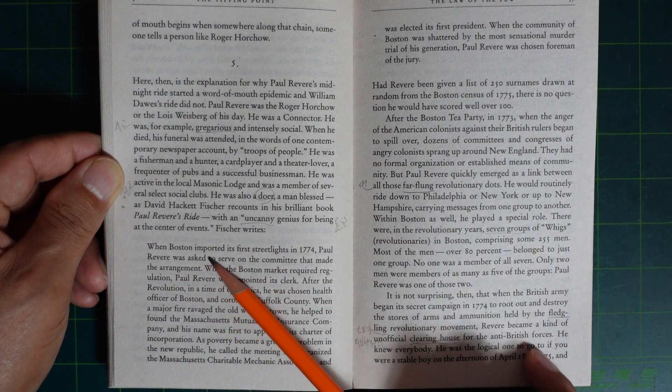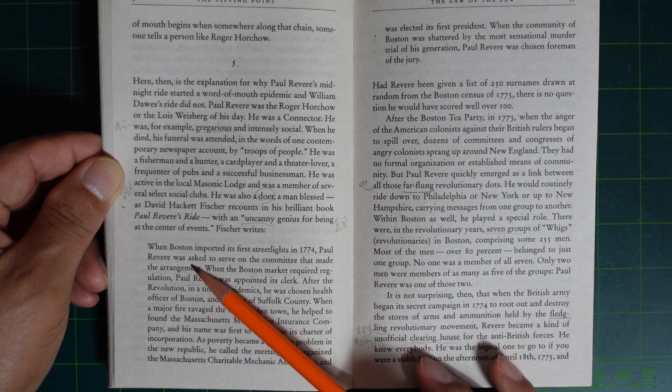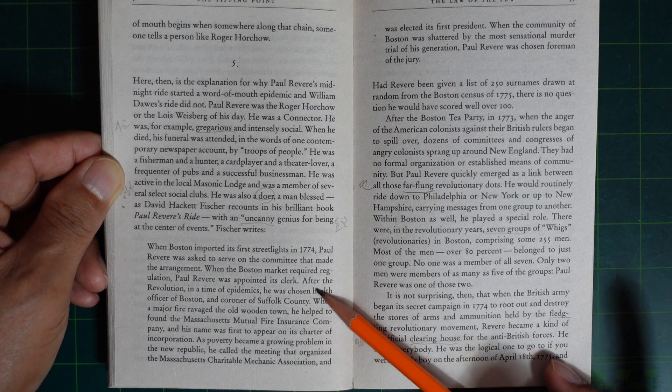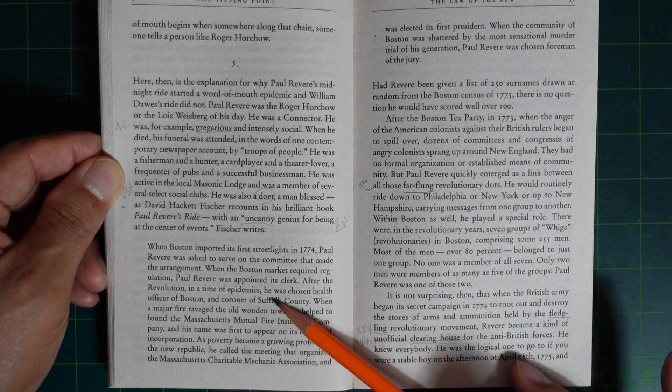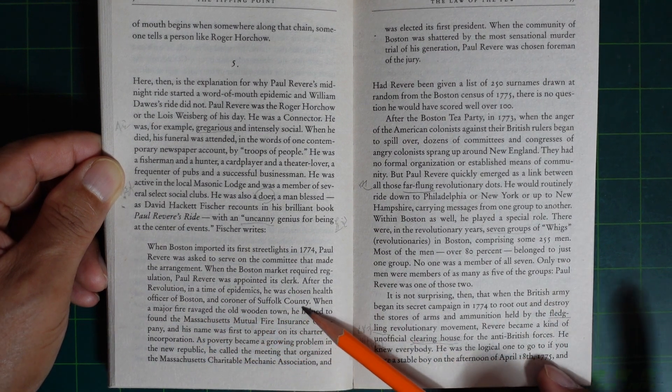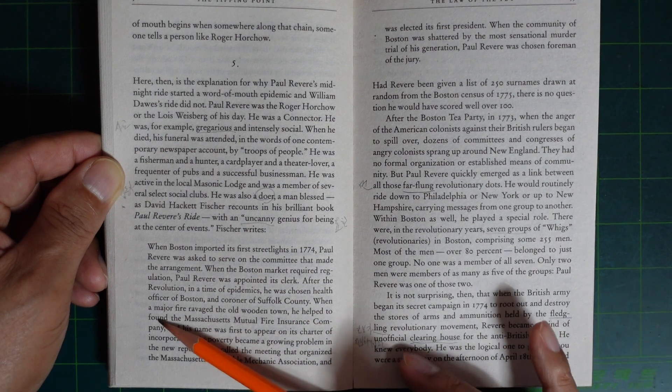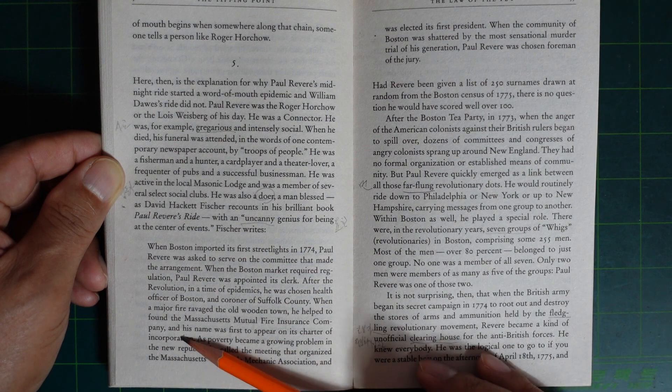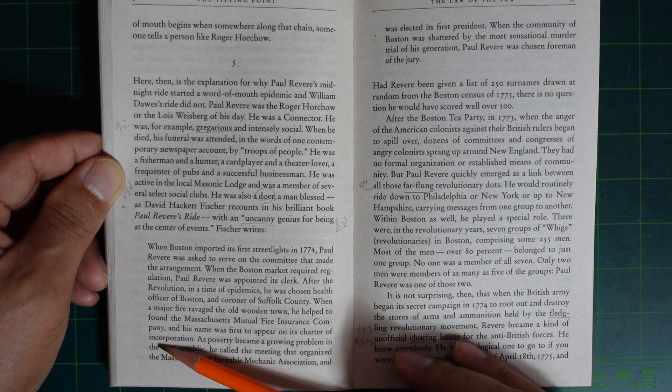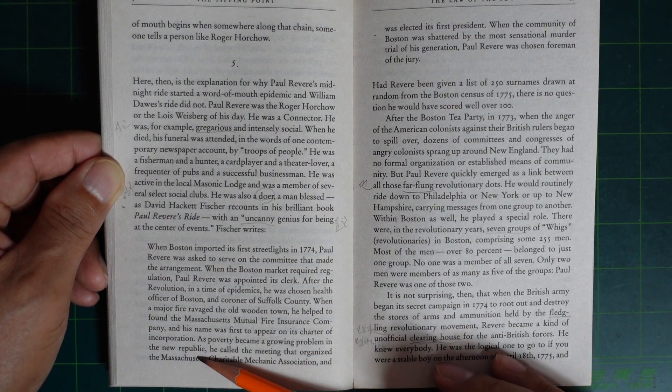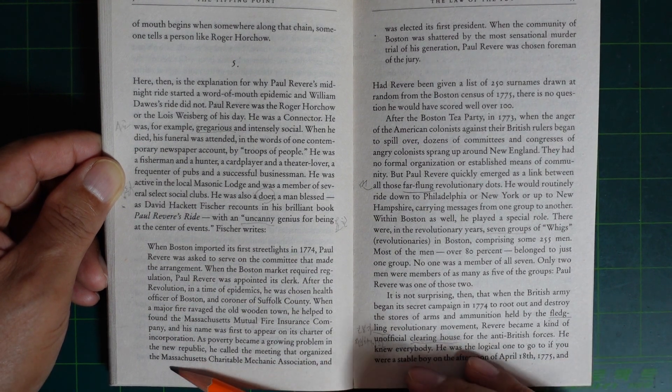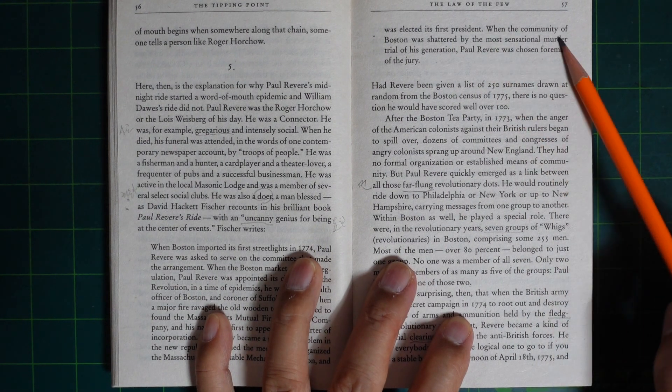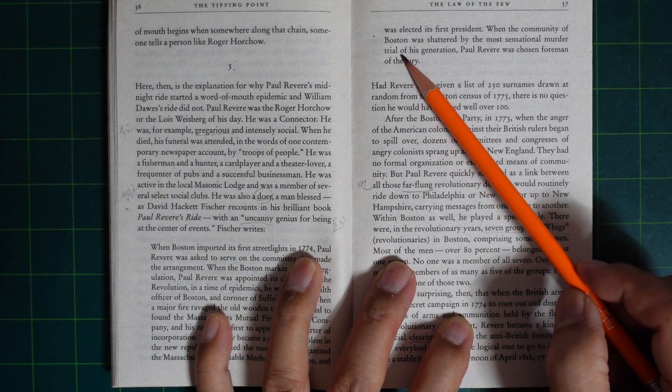Fischer writes: When Boston imported its first streetlights in 1774, Paul Revere was asked to serve on the committee that made the arrangement. When the Boston market required regulation, Paul Revere was appointed its clerk. After the Revolution, in a time of epidemics, he was chosen health officer of Boston and coroner of Suffolk County. When a major fire ravaged the old wooden town, he helped to found the Massachusetts Mutual Fire Insurance Company and his name was first to appear on its charter of incorporation. As poverty became a growing problem in the new republic, he called the meeting that organized the Massachusetts Charitable Mechanic Association and was elected its first president.